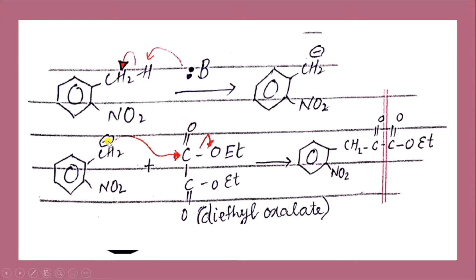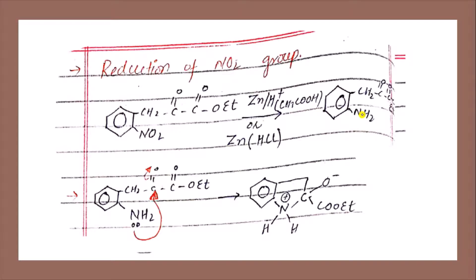This CH2 negative will attack on the ketocarbon. This electron will transfer back on this carbon, and the OEt group will be removed. We will get this structure. In the next step, we have to reduce the NO2 group.